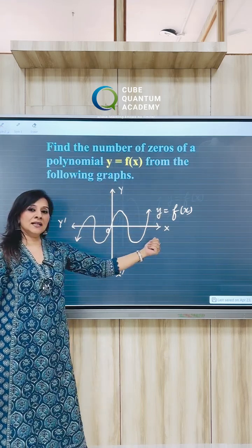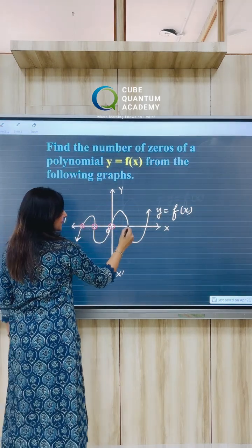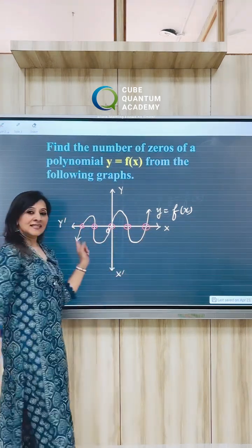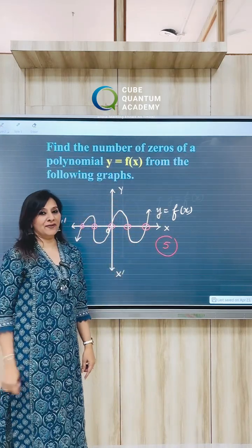Now let's find out what is the number of zeros of this polynomial. Since this graph is intersecting the x-axis at 5 places, so the number of zeros is 5.